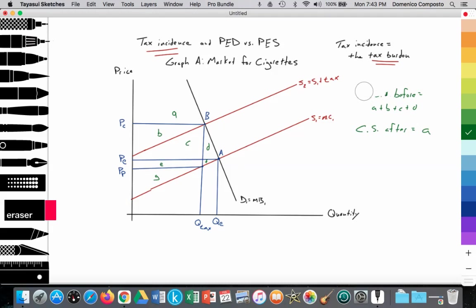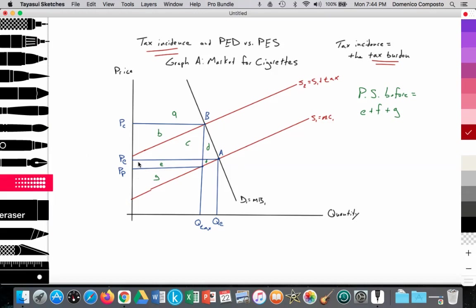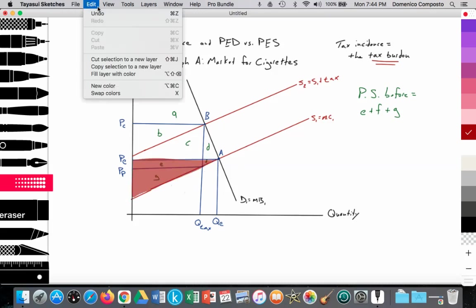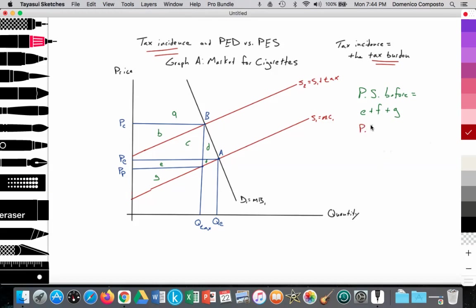In terms of the producer surplus, producer surplus before the tax was equal to areas E, F, and G. E plus F plus G. Just to highlight that, we can see, it is this area here. We follow the supply curve, the cost of production up to the free market equilibrium price. And here we see that triangular area. And then the producer surplus after the tax is just equal to area G. So a reduction in the surplus for producers. A welfare loss is created. We have a welfare loss, which is equal to areas D and F. D plus F. D is the lost consumer surplus, and F is the lost producer surplus. So the sum of the two is the welfare loss.